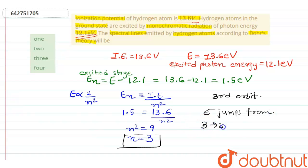Third to second, third to first, or second to first. So we can say three spectral lines are emitted. The answer will be C.